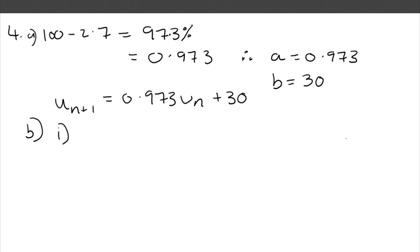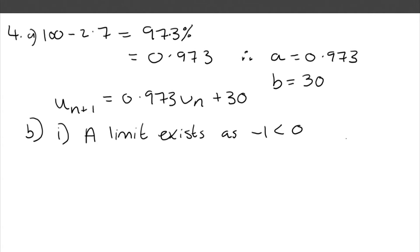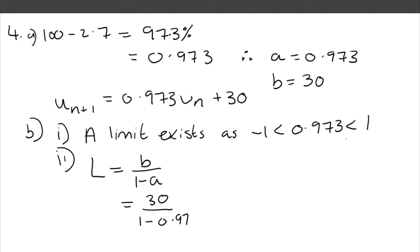Part b(i): explain why the population will stabilise in the long term. Stabilise means it reaches a limit. Looking at the recurrence relation, 0.973 is between -1 and 1, so a limit exists - and because a limit exists, it will stabilise. Part b(ii): find that limit. Limit = b/(1 - a) = 30/(1 - 0.973). Typed into calculator: 1111.1 recurring, which is 1100 to the nearest hundred mice.